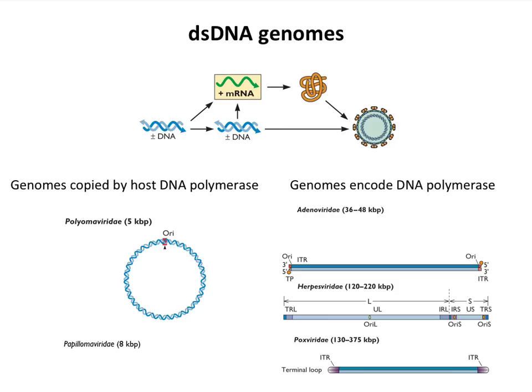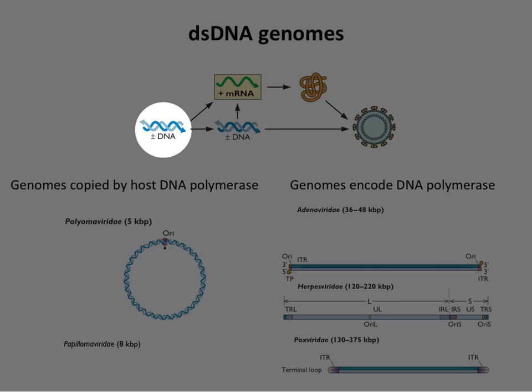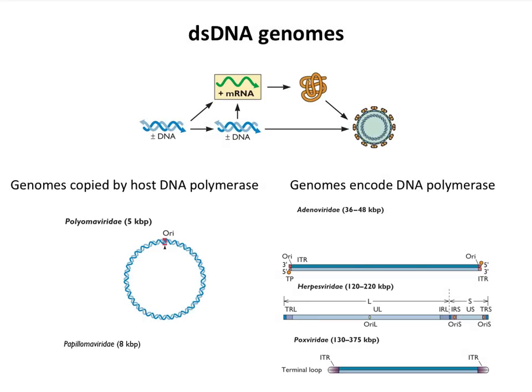The genomes of these viruses have different configurations and come in different sizes, which has implications. For a virus with a double-stranded DNA genome, using the Baltimore scheme, mRNA is the center. If you're double-stranded DNA, it's easy — DNA-dependent RNA polymerase Pol II in your cell can copy a double-stranded DNA template and make RNA. That's what it does for a living. So you can go right to mRNA from double-stranded DNA. When these viruses get into the cell, they make mRNA.